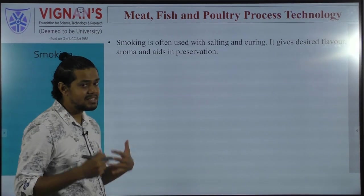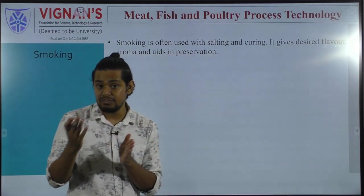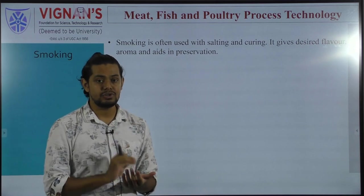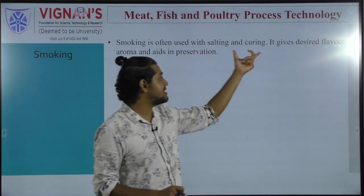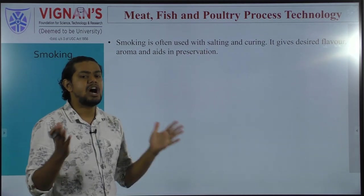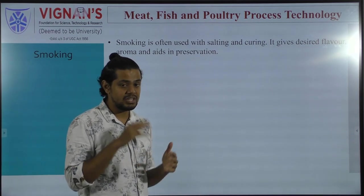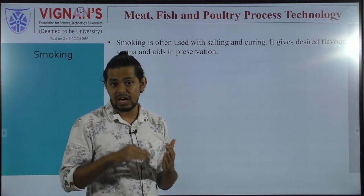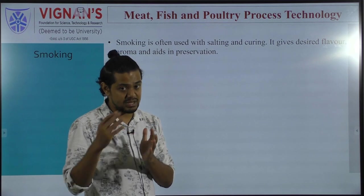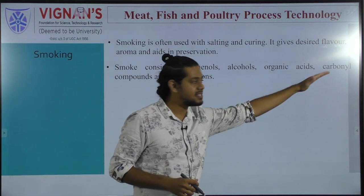The next preservation technique is smoking. We will see how smoking influences the overall palatability characteristics and shelf life of meat and meat products. Smoking is often used along with salt and curing. It gives desired flavor and aroma and aids in preservation. Charcoal grills are mostly used at household level, where the charcoal liberates a lot of phenolic compounds which impart flavor to the meat.